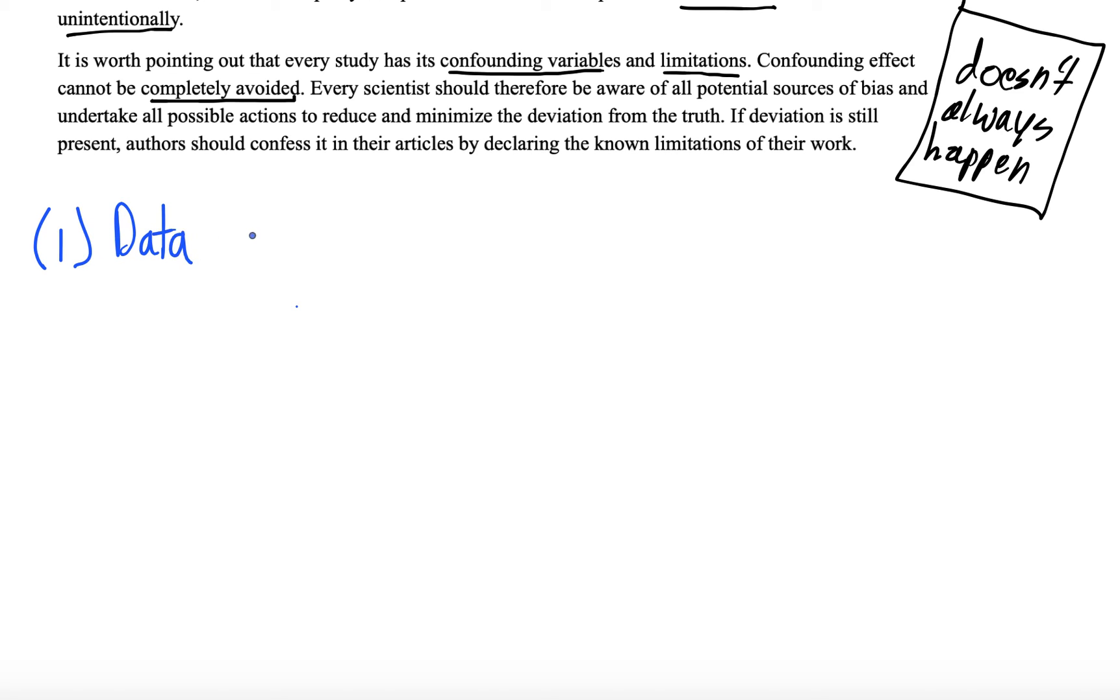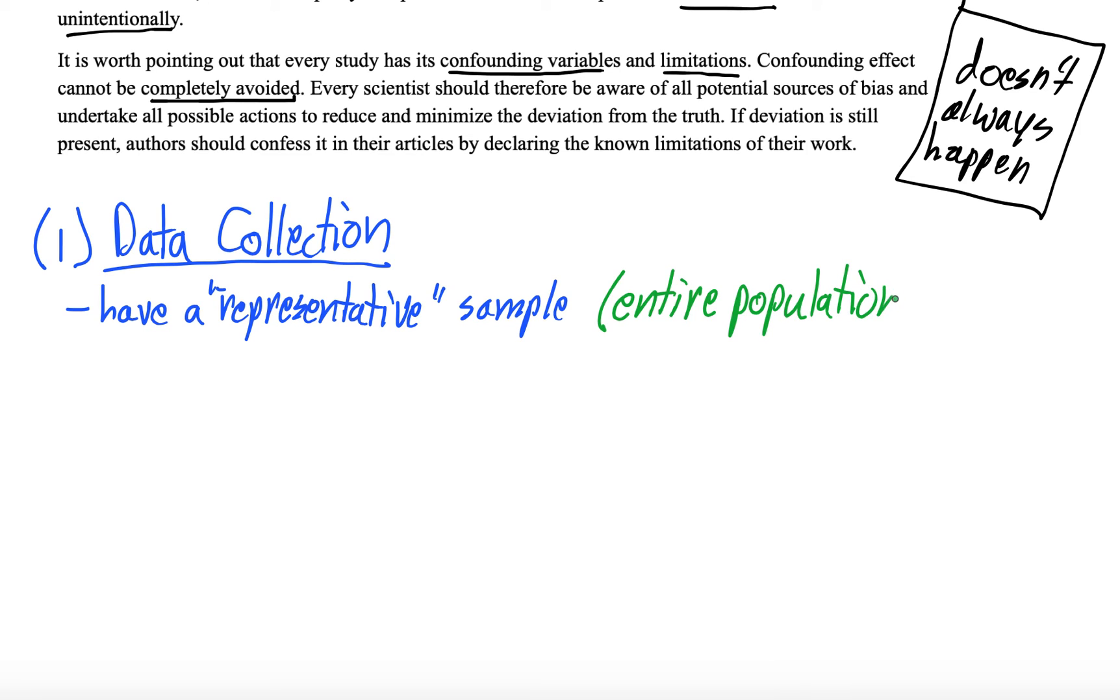So the first thing we talked about, data collection. In data collection, there are many opportunities for bias to occur. The goal of data collection is to have a representative sample. A representative sample is a sample that represents the entire population of interest. If you're doing a study looking at breast cancer in women all above the age of 50, in a perfect study you would include every single female above the age of 50 with breast cancer. That would be your entire population. But that's obviously not feasible. So what you have to do is try to design a study that has a representative sample of that population.